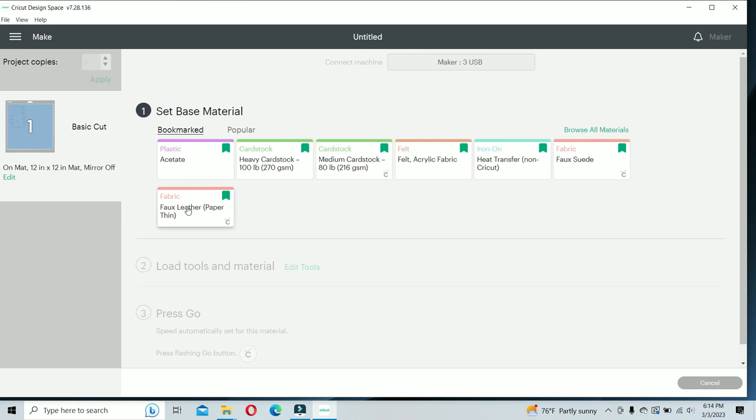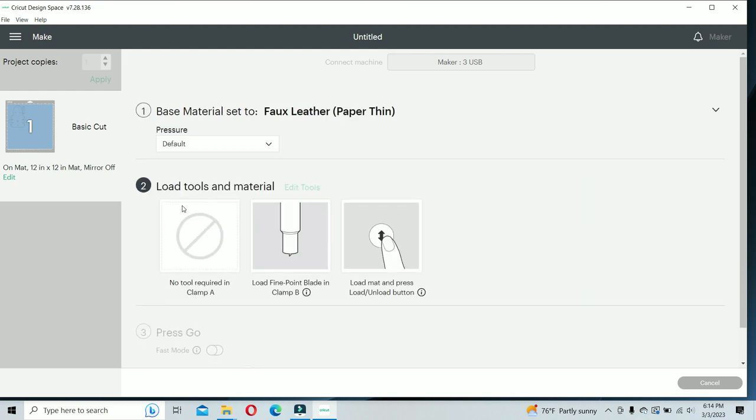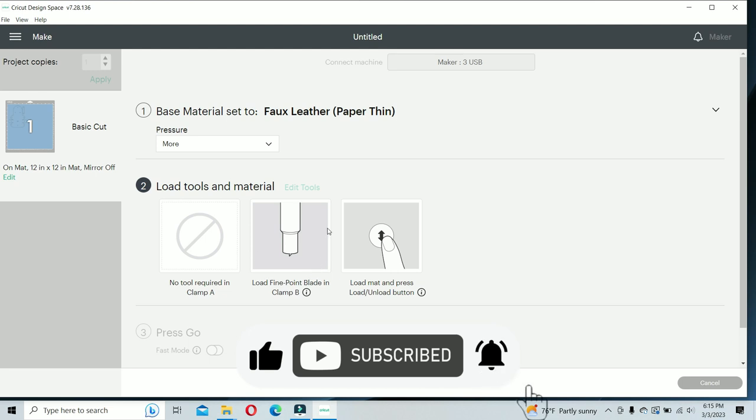I already have the material on my bookmark list, so I'm going to click here to faux leather, paper thin. I'm going to change the pressure to more. I already have my fine point blade loaded in the machine. So we're going to head over to the machine, load the mat, load it into the Cricut and get ready to cut it.